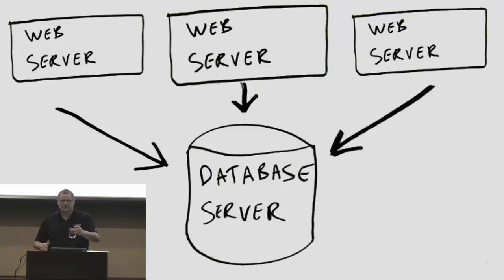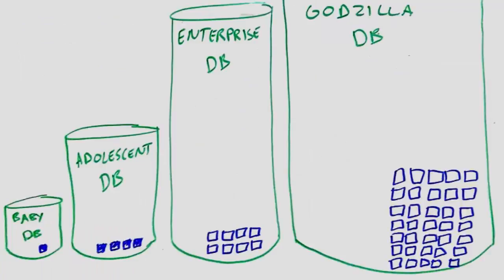One thing you can do is what's called vertically scaling your database. It just means switching to a beefier server — you may start with a really cheap one-core machine, upgrade to a four-core database server, then as your business grows maybe go to eight cores. But maybe you find yourself doing really, really well — front page of Reddit, Black Friday — and you're getting a lot of traffic. Now you start thinking about pricing the bazillion-core server: the Godzilla database server, 90 cores or more. Those actually exist. So that is one approach, but there are some problems with it.